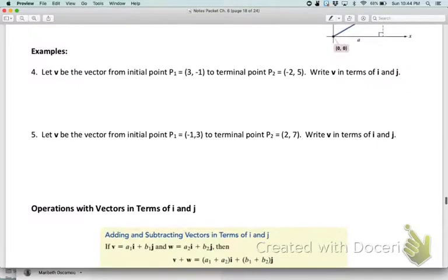Let's look at examples 4 and 5. We want v to be the vector that has an initial point at (3, -1) and a terminal point at (-2, 5). We need to subtract to be able to figure out the values of a and b.